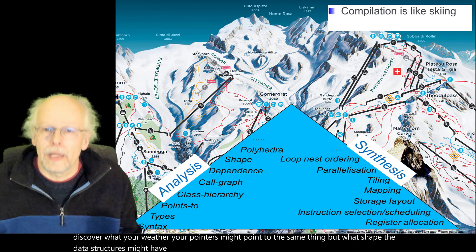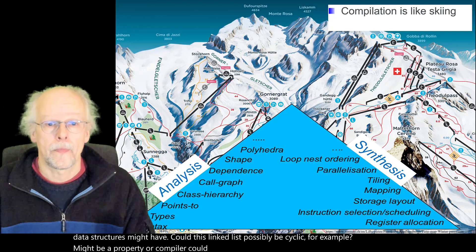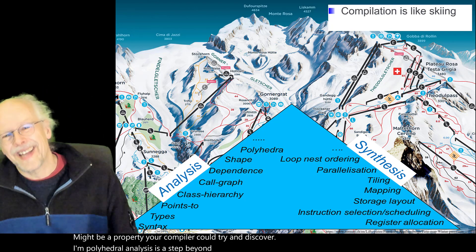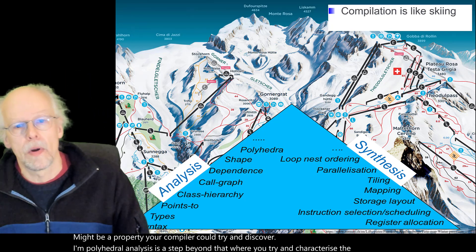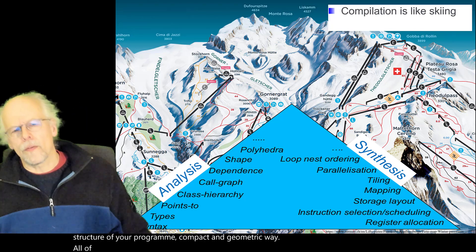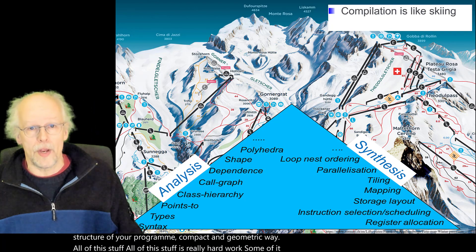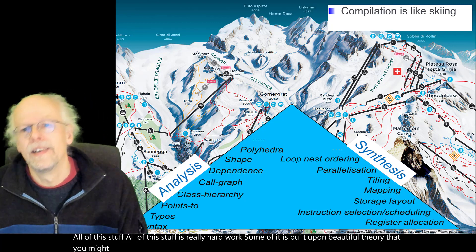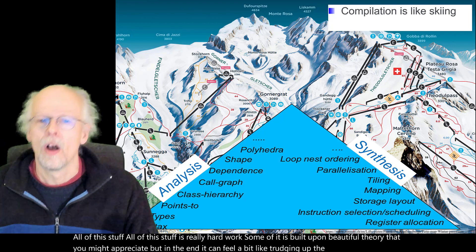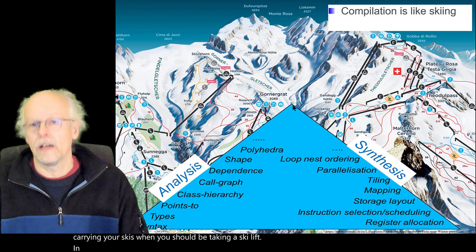There are more sophisticated analyses like shape analysis, where you try and not just discover whether your pointers might point to the same thing but what shape the data structures might have. Could this linked list possibly be cyclic, for example — that might be a property your compiler could try and discover. Polyhedral analysis is a step beyond that, where you try and characterize the dependence structure of your program in a compact and geometric way. All of this stuff is really hard work, and some of it is built upon beautiful theory, but in the end it can feel a bit like trudging up the mountain carrying your skis when you should be taking a ski lift.